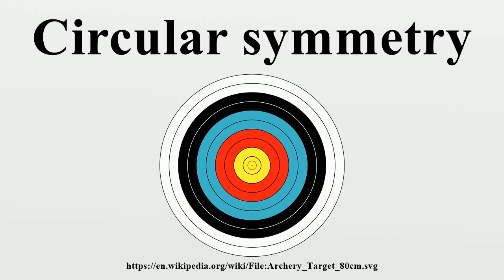In geometry, circular symmetry is a type of continuous symmetry for a plane or object that can be rotated by any arbitrary angle and map onto itself. Rotational circular symmetry is isomorphic with the circle group in the complex plane, or the special orthogonal group SO, and unitary group U.